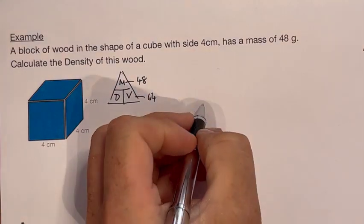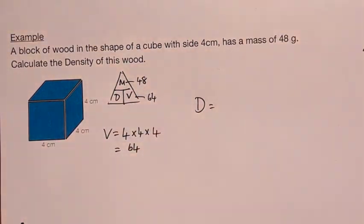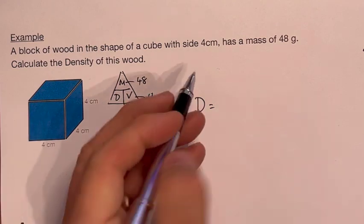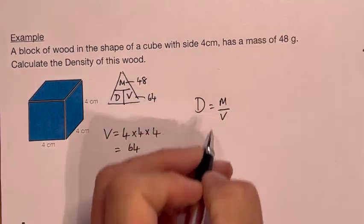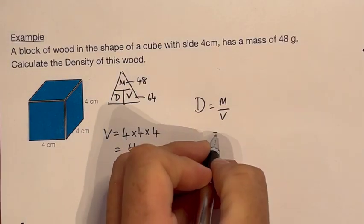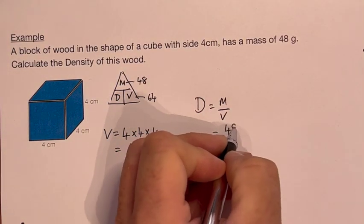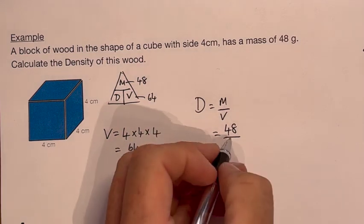So the density of this item is the mass divided by the volume. So in this case we have 48 divided by 64.